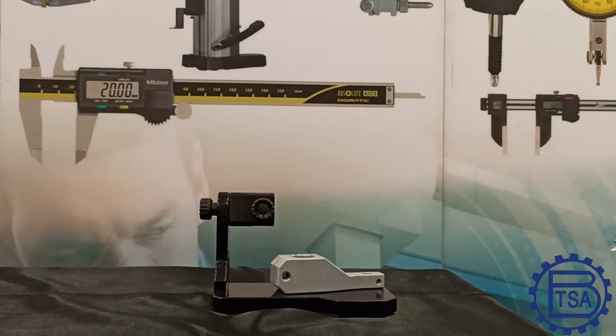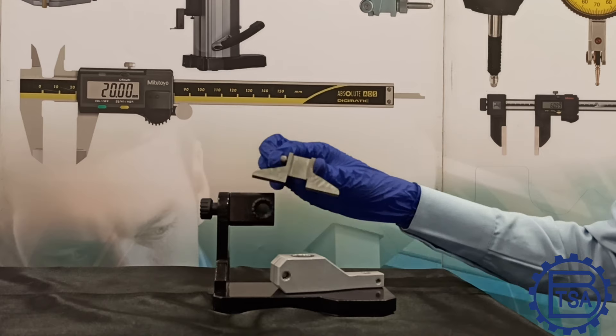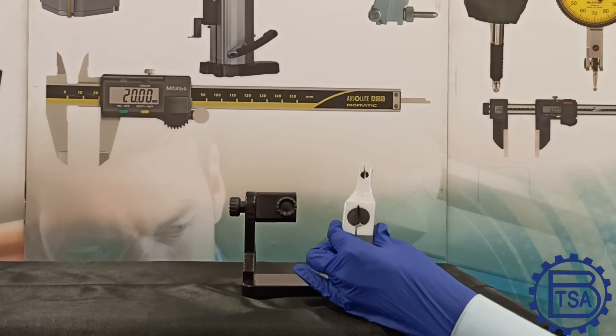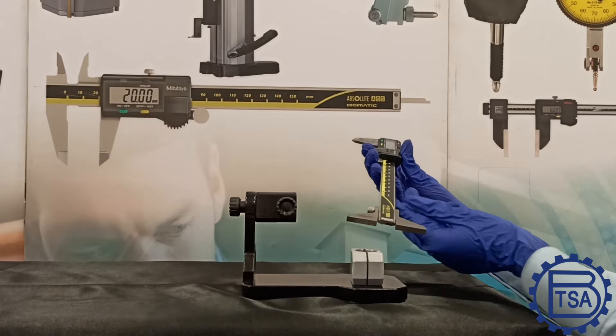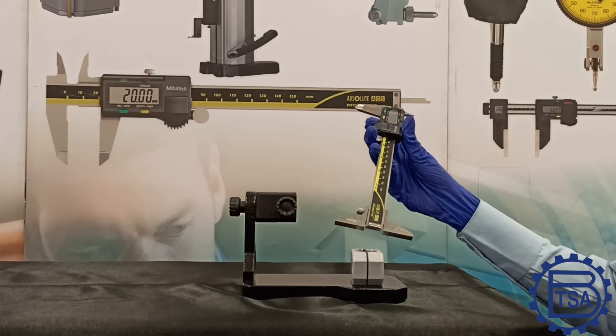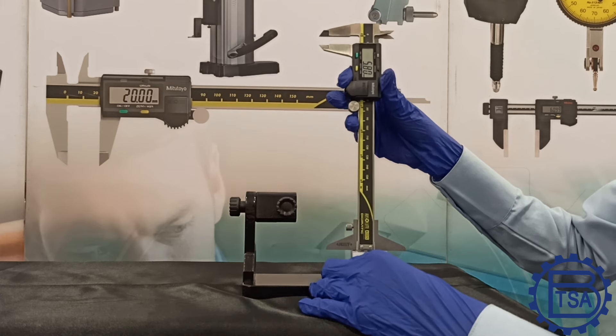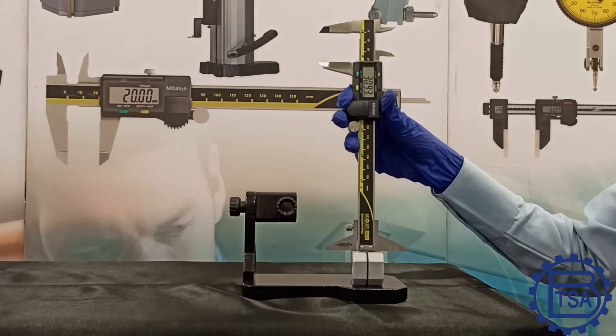In such cases, we can use an additional accessory known as the depth gauge attachment. We can easily fix this attachment to any vernier caliper to check the depth. It becomes much easier to check the depth of a larger hole. Now let's measure the depth of the bigger diameter of this component using the same digital caliper. As you can see, I have attached the depth measuring accessory to the same caliper. Now my caliper is not entering the hole and can easily measure the hole of the larger diameter. The measured depth of this component is 30.93 mm.